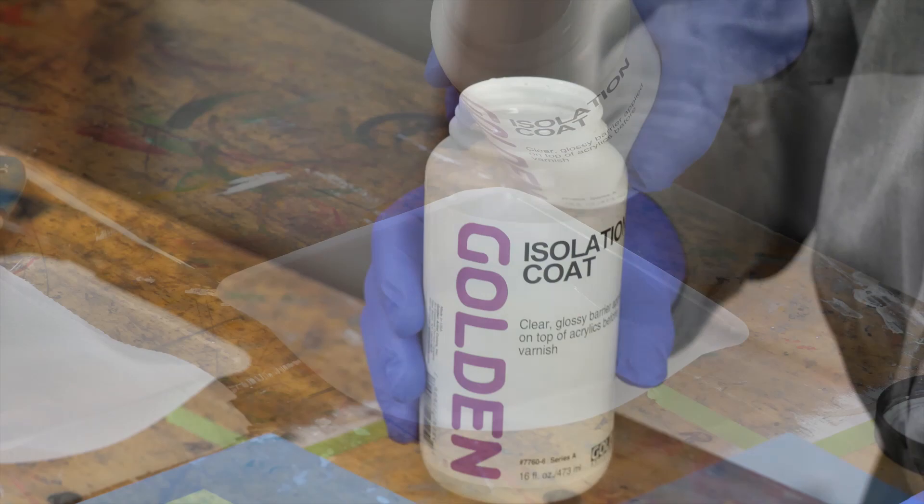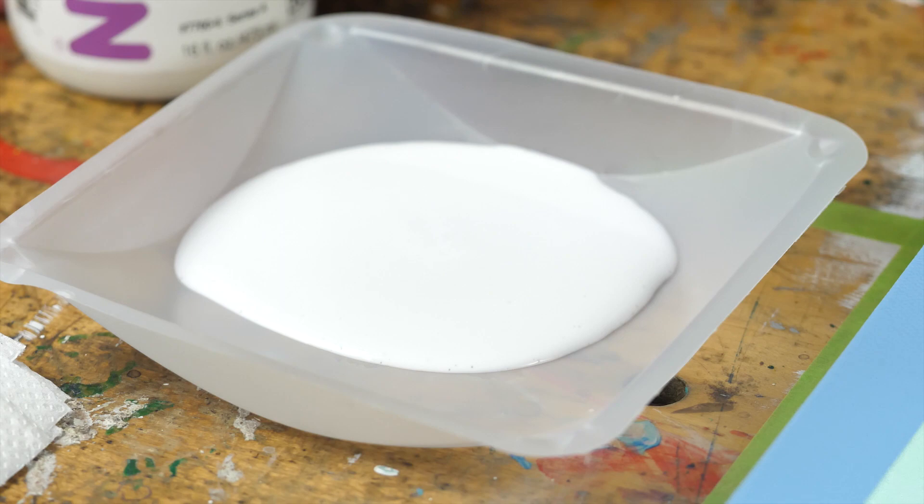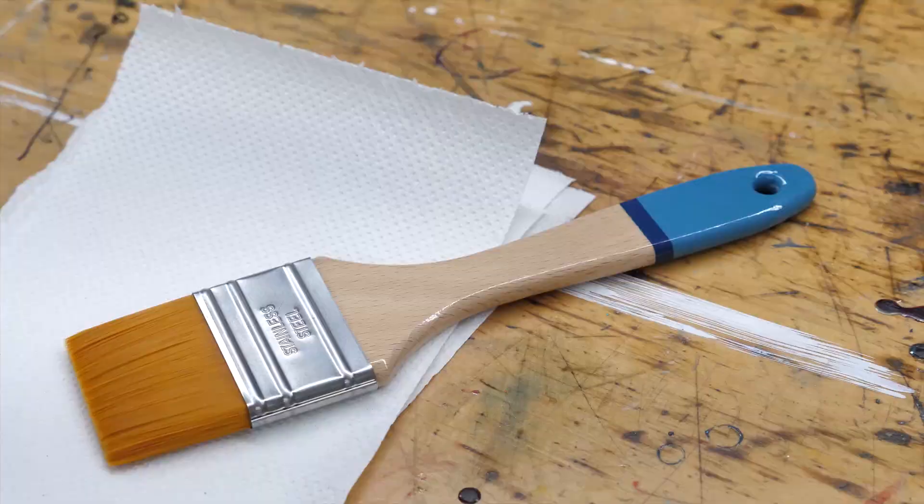For each square foot of your painting you'll need about one ounce. You may need more if your painting is really absorbent or textural, but if it's very smooth and not absorbent maybe you'll need less. It's vital to make sure you have enough isolation coat available before you begin.